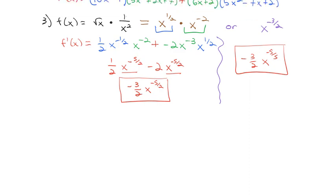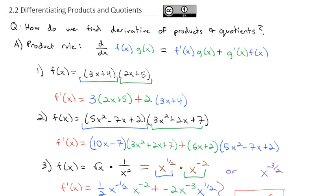So that is our product rule — you should become very familiar with it. The derivative of the first times the second, plus the derivative of the second times the first.